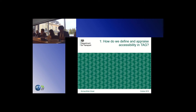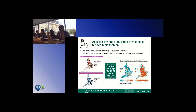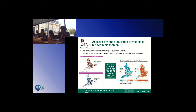To start off with: how do we define and appraise accessibility in TAG? I've got two headline conceptions, which actually come from a paper my colleagues Jago Penrose and James Canton presented a couple of years ago. There are two notions in that paper of what accessibility means: the ease with which people in place are connected, and the usability of the transport system for people with physical and hidden disabilities. The theme of this workshop is very much focusing on the first of those, although I will touch on the second briefly.